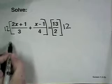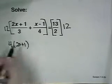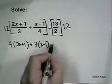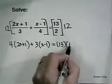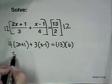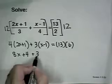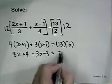And we're left with 4 times (2x + 1) plus 3 times (x - 1) equals 13 times 6. Now we'll use the distributive property to get 8x + 4 + 3x - 3 equals 78.